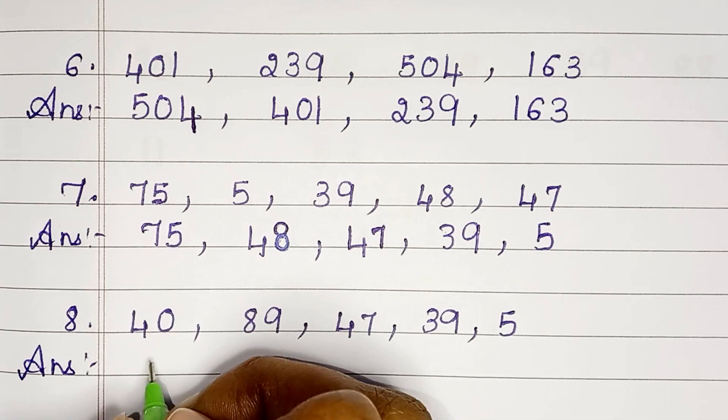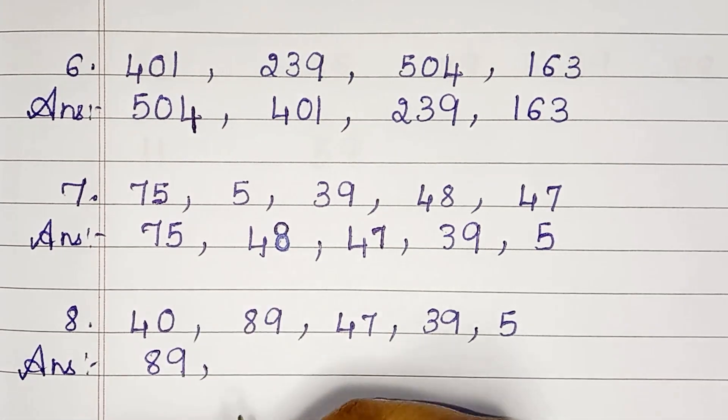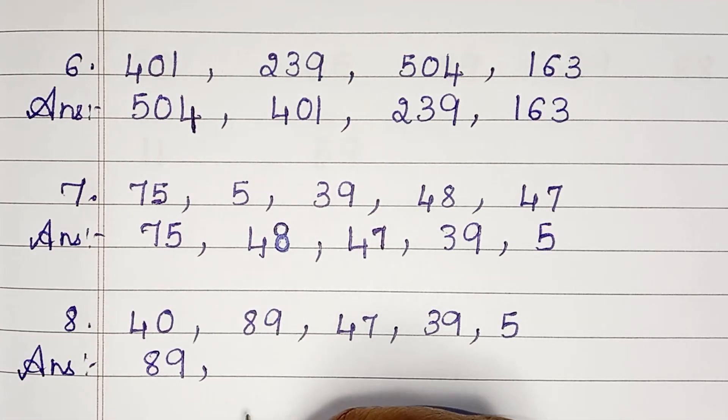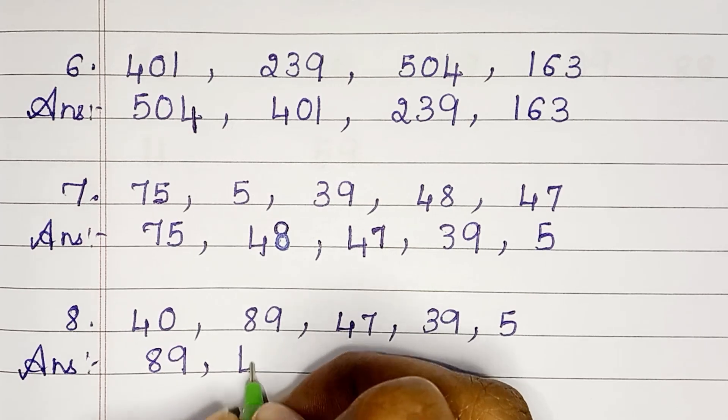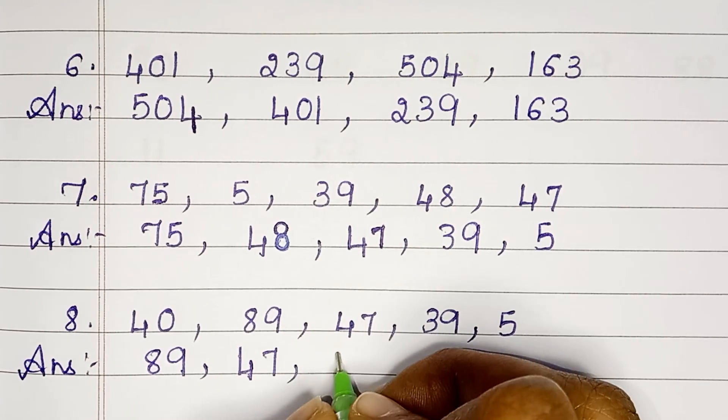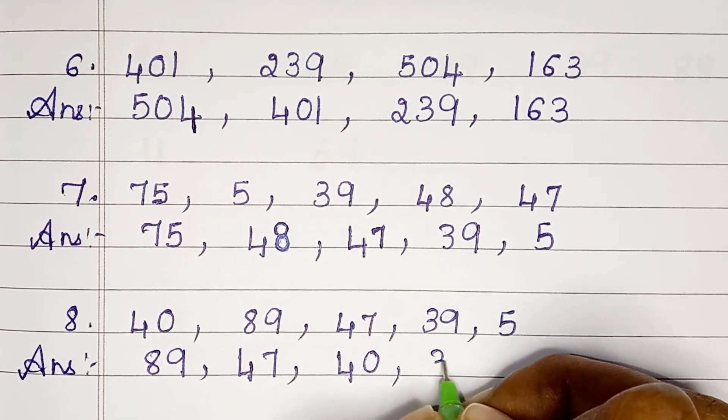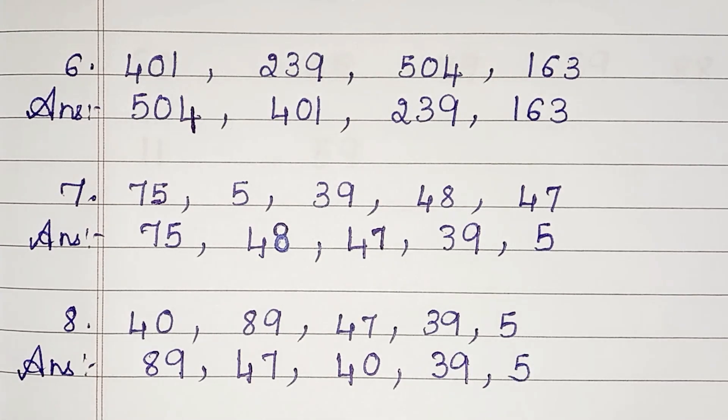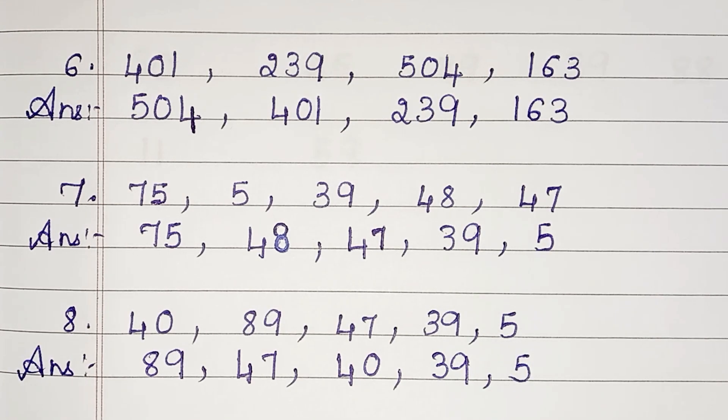In the next set of numbers: 40, 89, 47, 39, 5. So let us arrange in descending order: 89, 47, 40, 39, 5.